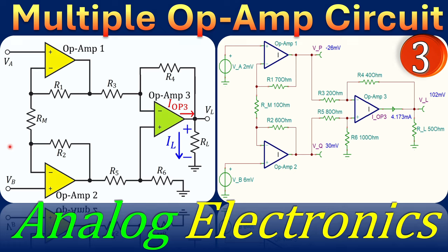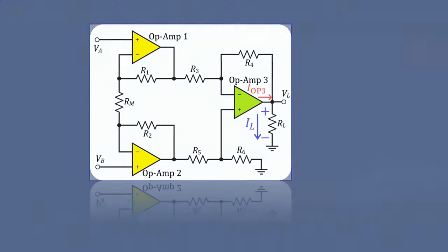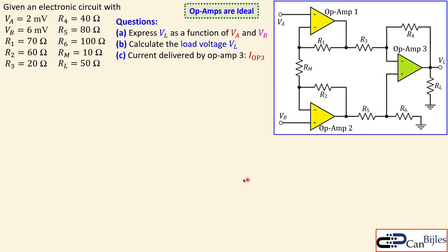Greetings and welcome to a new video about analog electronics. We continue with our examples about multiple op-amp circuits. This will be example number three, where I look at a circuit with three op-amps, a couple of resistors, and two input voltage sources. We will work everything out step by step in our calculations and verify these in SPICE simulations.